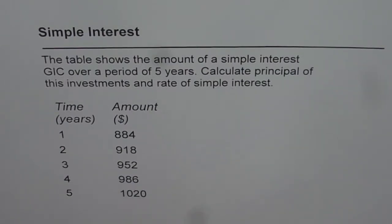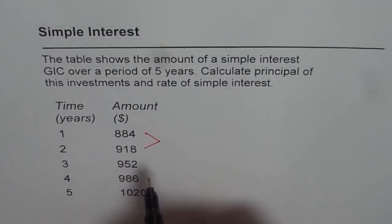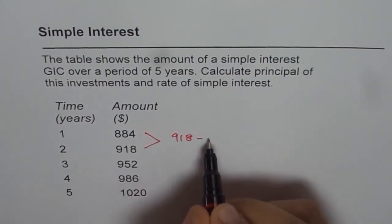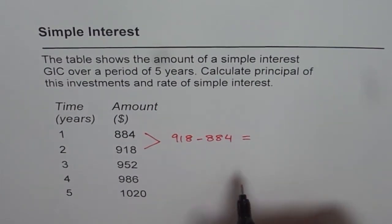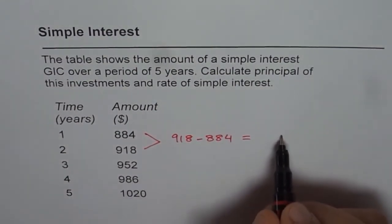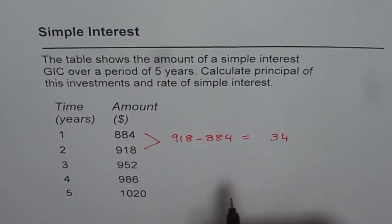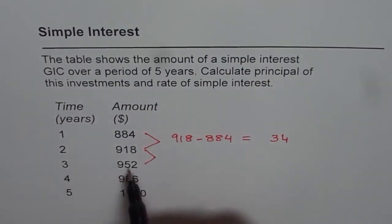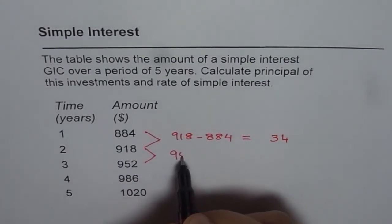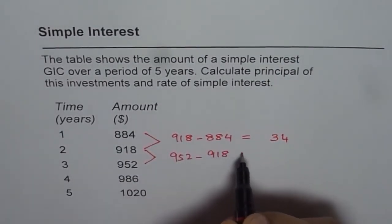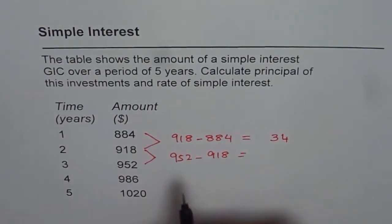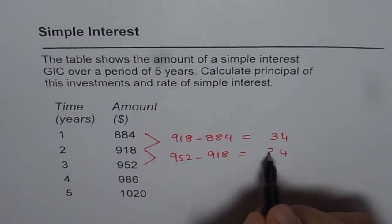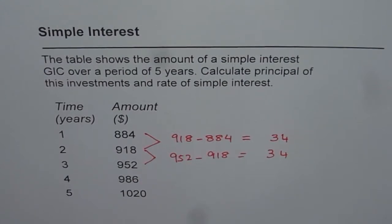Let's find the first difference. The first difference is 918 minus 884, which is 34. Then let's find the first difference between the end of the third year and second year: 952 minus 918. From 952 take away 918 — that also gives us 34.